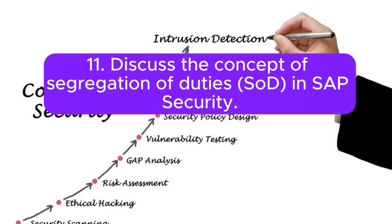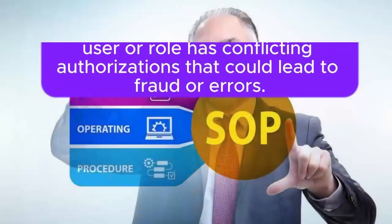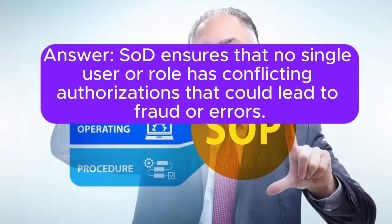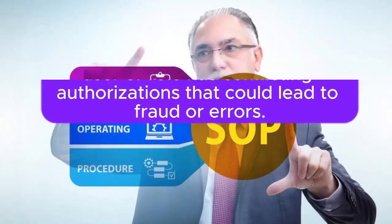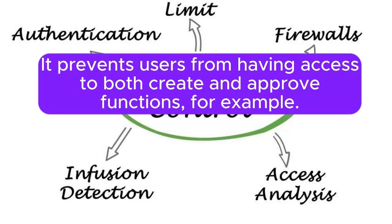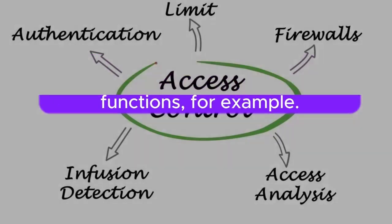Question 11: Discuss the concept of segregation of duties (SoD) in SAP security. Answer: SoD ensures that no single user or role has conflicting authorizations that could lead to fraud or errors. It prevents users from having access to both create and approve functions, for example.